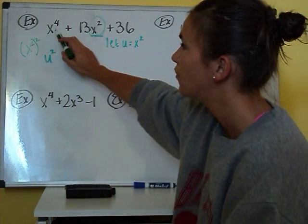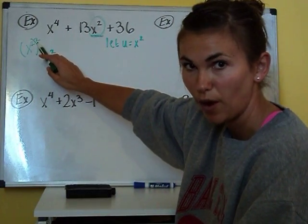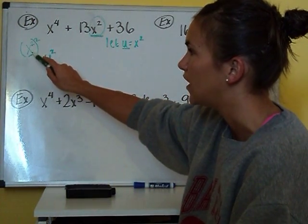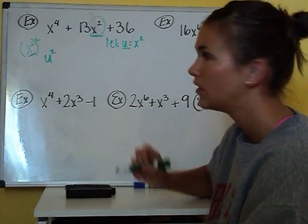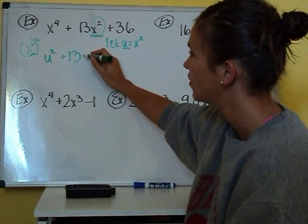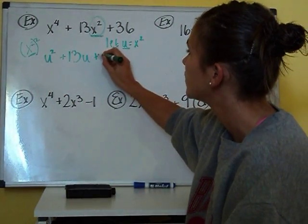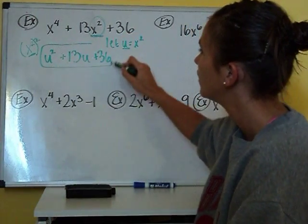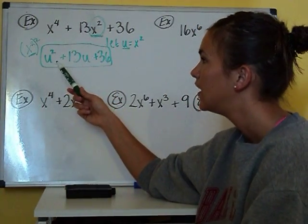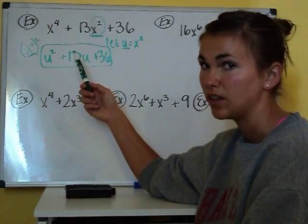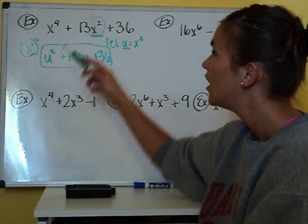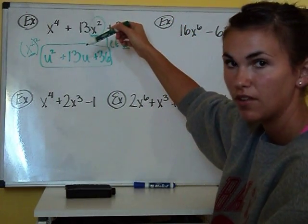Then I have plus 13 — and X squared is U — so I have 13U plus 36. This gives us U squared plus 13U plus 36, which is written in quadratic form. We know how to solve something like this — we could use the quadratic formula, factoring, and so forth. So we've turned something we did not know how to solve into something we do know how to solve. That's our goal for today.